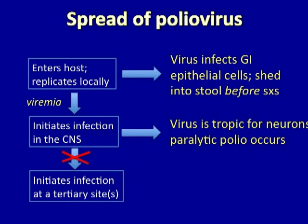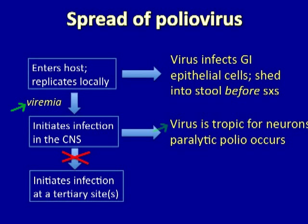Poliovirus is also a virus that is inoculated through the gastrointestinal route, and it does infect epithelial cells. The virus may be shed into the stools even before symptoms occur. However, with poliovirus, there is a viremia that occurs from the intestine, and the virus is tropic for neurons in the spinal column and the brain, and may cause paralytic polio in some cases of poliovirus infection.